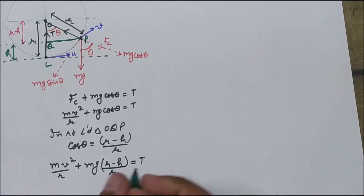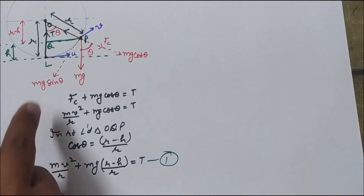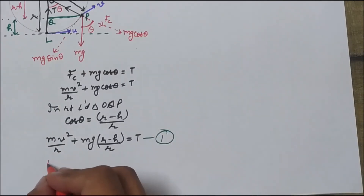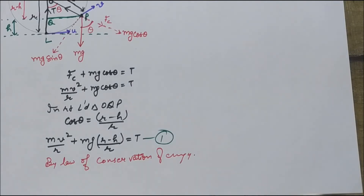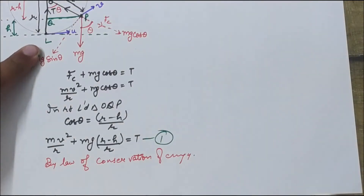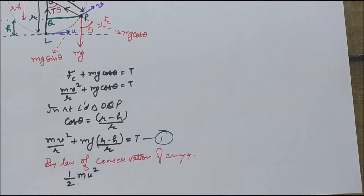We term this as equation 1. Since only the initial velocity u is known to us, we will now evaluate the velocity v of the particle at point P. By the law of conservation of energy, the energy possessed by the particle at every location in this circle is the same. The total energy at location L equals the total energy at point P. The total energy at L is only half m u² since there is no height at location L.